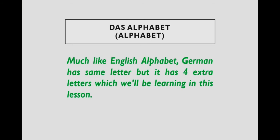Just like we have studied in English, there are 26 alphabets. So it seems that in German there are 26 alphabets, but there are 4 extra alphabets which we will learn in this lesson.